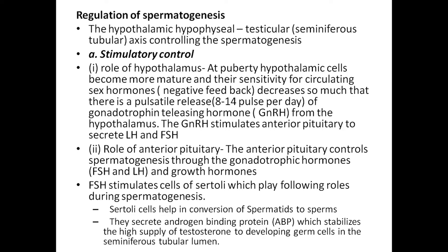Regulation of spermatogenesis: the hypothalamic-hypophyseal-testicular seminiferous tubular axis controls spermatogenesis. Stimulatory control of hypothalamus: at puberty, hypothalamic cells become more mature and sensitivity to circulating sex hormones decreases, causing pulsatile release of gonadotropin-releasing hormone (GnRH). From the hypothalamus, GnRH stimulates the anterior pituitary to secrete LH and FSH.